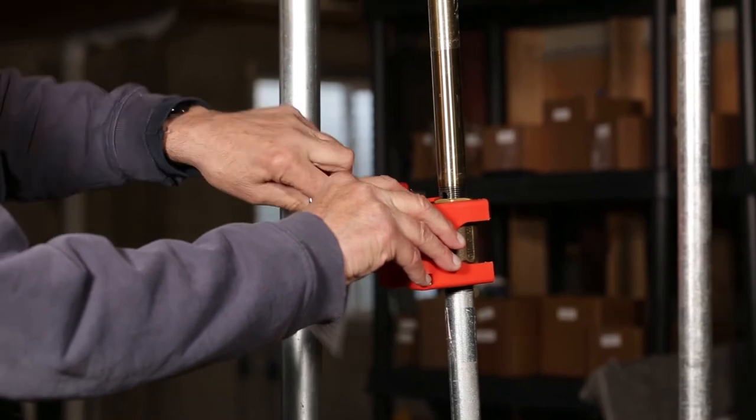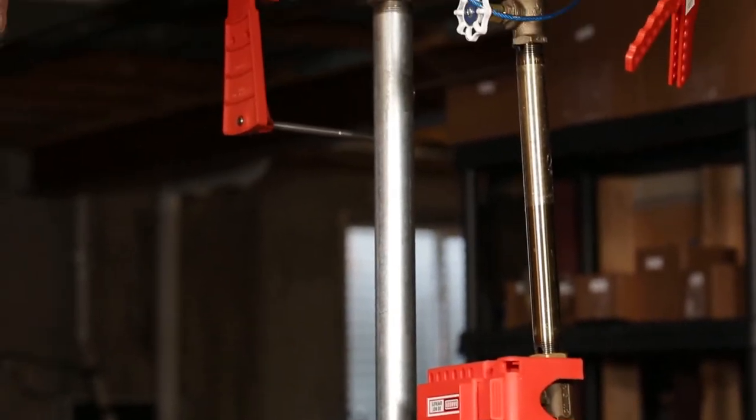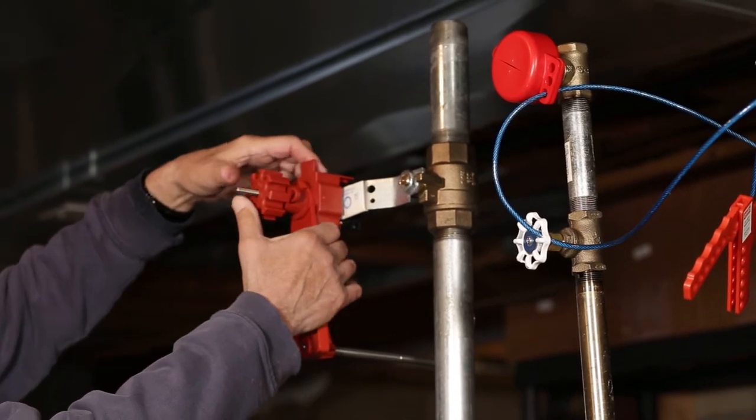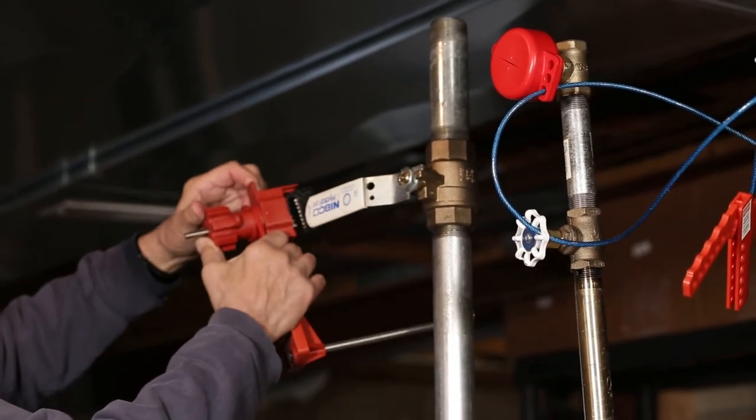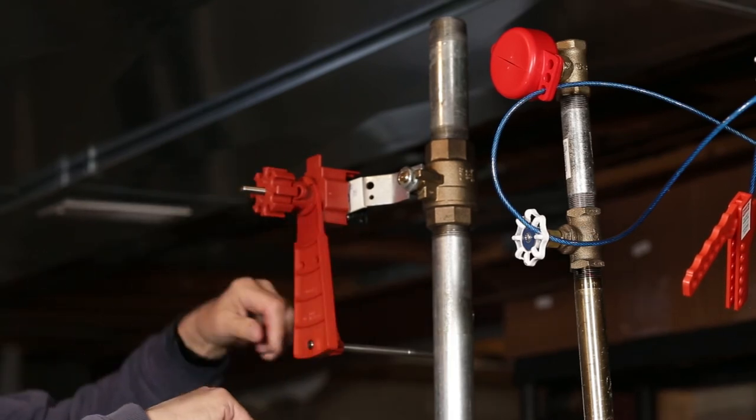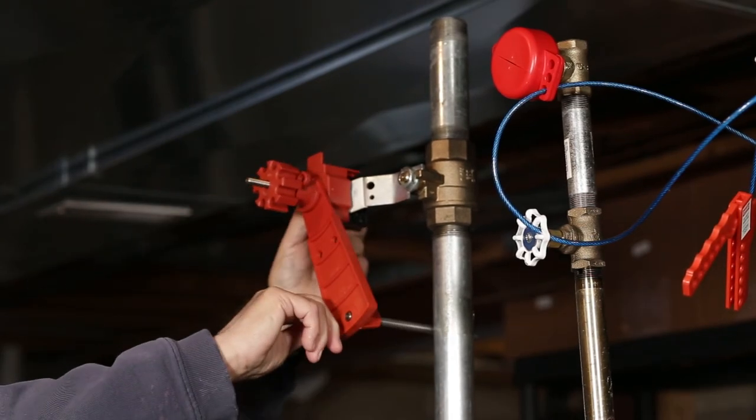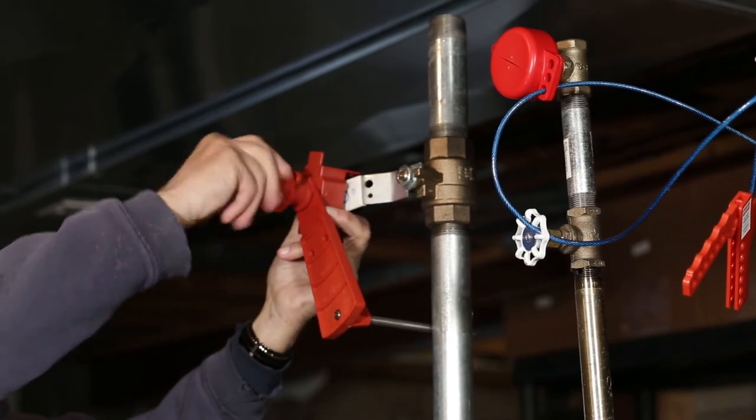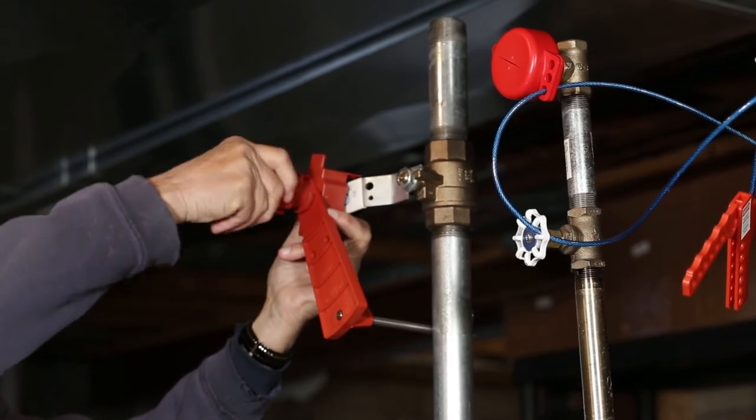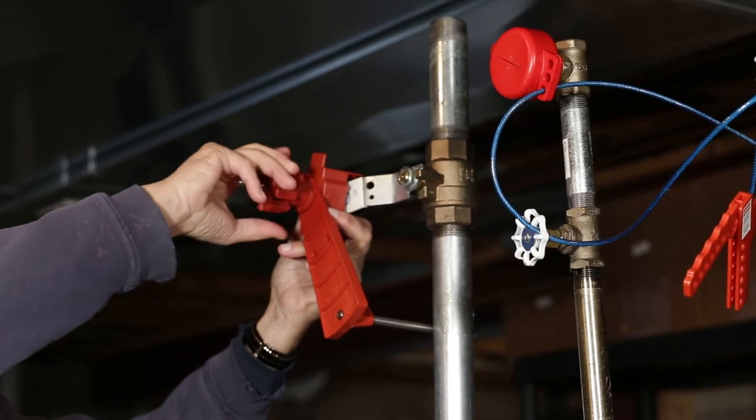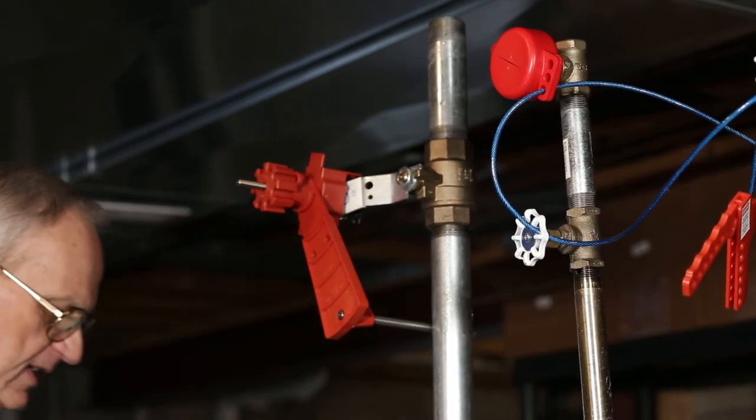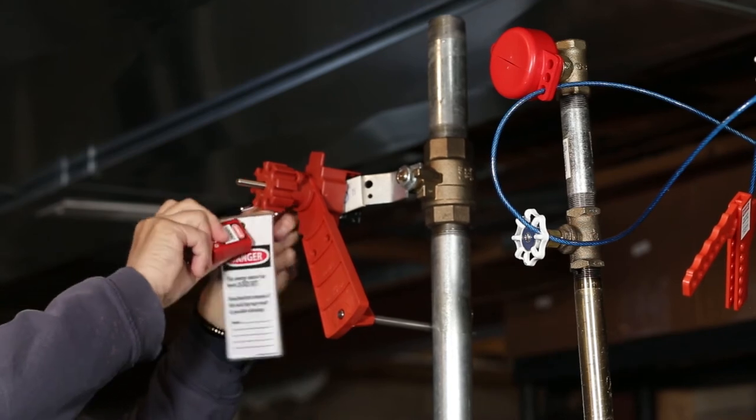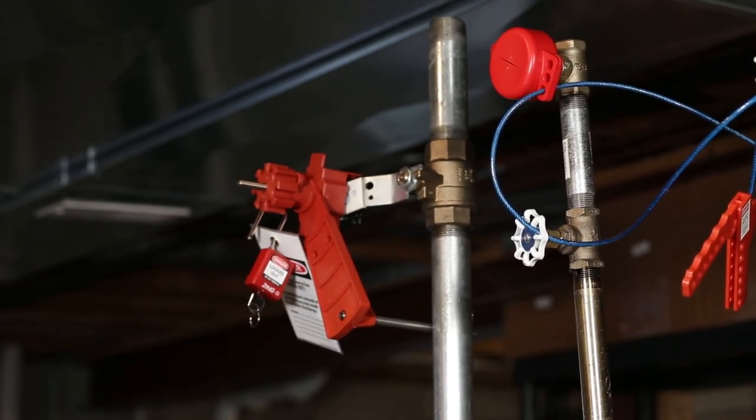The more universal device that's out there now is actually called the universal valve lockout. This is a one-piece device, simply slips on over the handle, release the catch, swing the arm over to the pipe valve body, you tighten the wheel down, and lock and tag will go through the side into the handle, and the device is locked out.